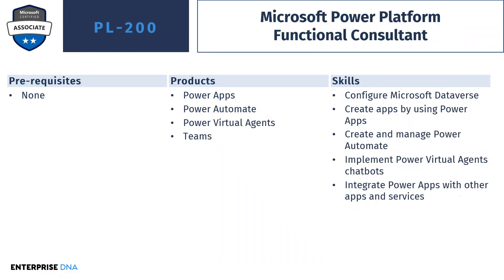Next, we have PL 200, which also doesn't require any prerequisites — this is the Power Platform Functional Consultant certification. Here, you're not looking at Power BI, and you're adding in Power Virtual Agents and Teams. At the skill level, you're doing more advanced things than in the App Maker role. You're configuring Microsoft Dataverses, so you're actually moving towards that solution architect role. You're creating apps and workflows like before, but you're also implementing Power Virtual Agent chatbots and integrating your existing apps and workflows with other Microsoft and third-party services.